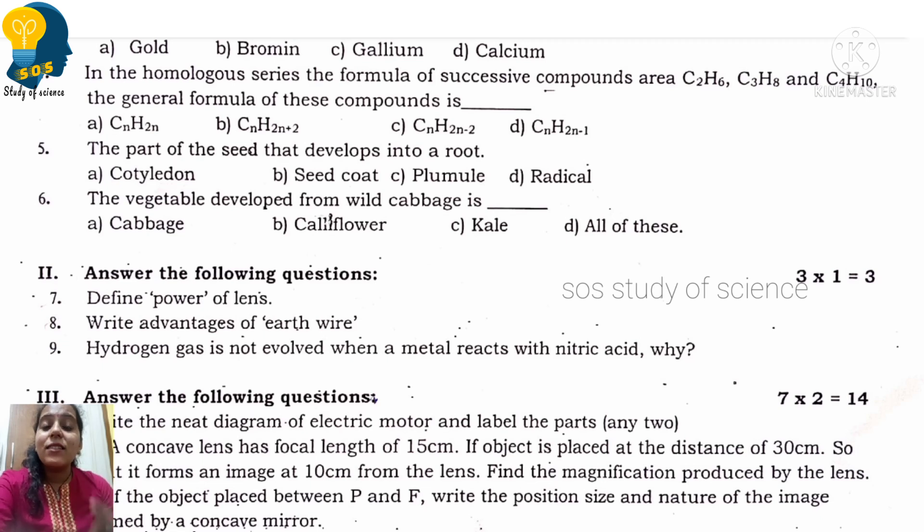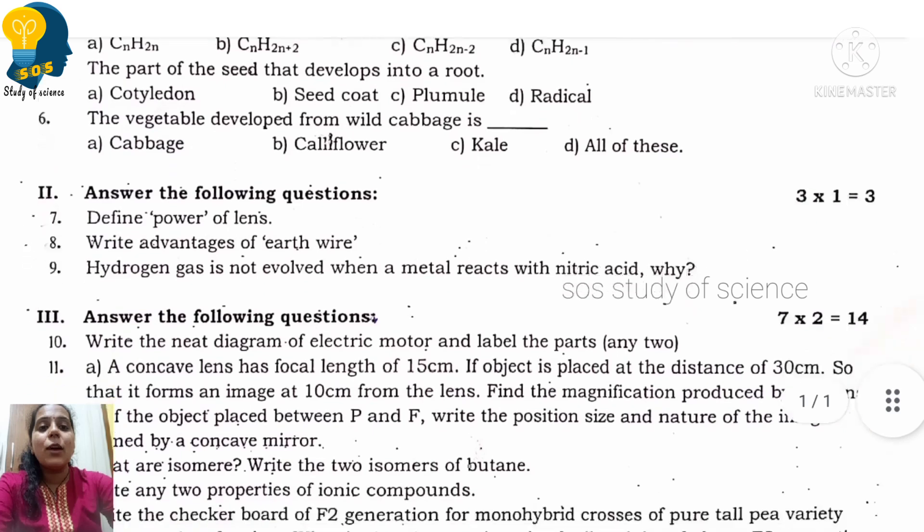Next question: hydrogen gas is not evolved when a metal reacts with nitric acid, why? We already told you in scoring packages, if a metal reacts with any acid, it liberates hydrogen gas. But if a metal react with nitric acid, it does not liberate hydrogen gas. Why? Because in your exam you write just one statement: because nitric acid is a strong oxidizing agent. So it does not liberate hydrogen gas. Just one statement.